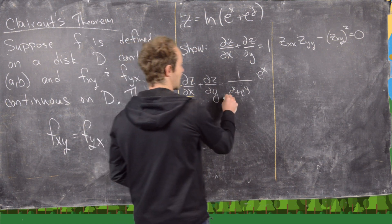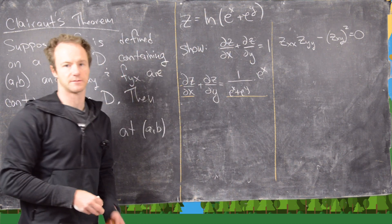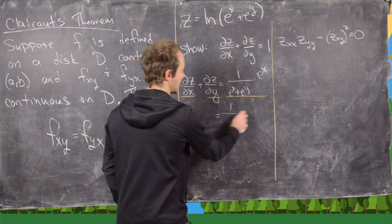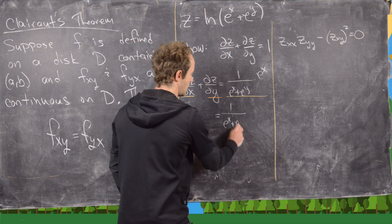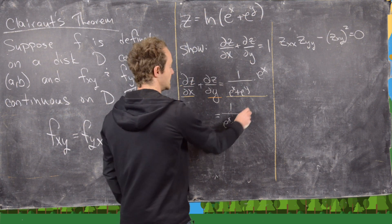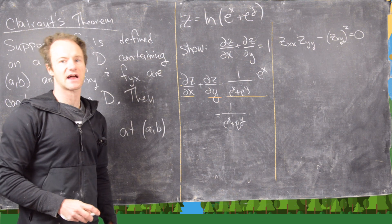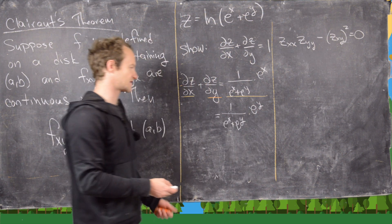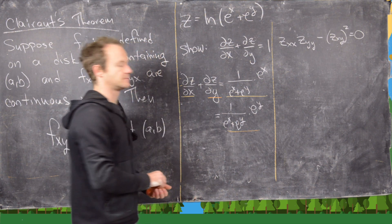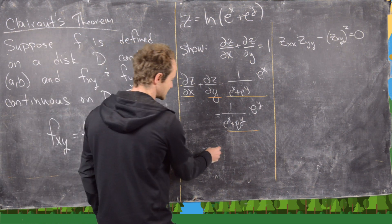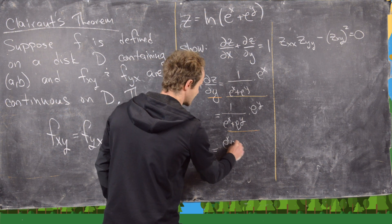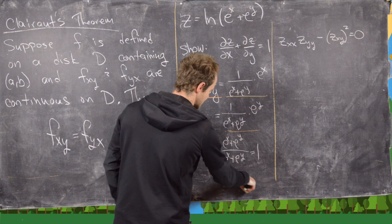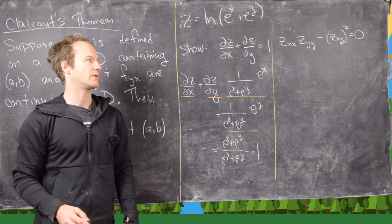So ∂z/∂x = e^x / (e^x + e^y). Similarly, the derivative of the natural log sends everything to the denominator, times the derivative of the inside with respect to y, giving e^y / (e^x + e^y). Adding them: (e^x + e^y) / (e^x + e^y) = 1, which is exactly what we wanted to show.